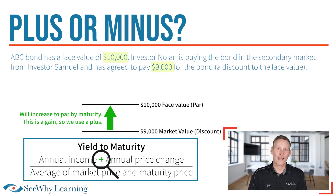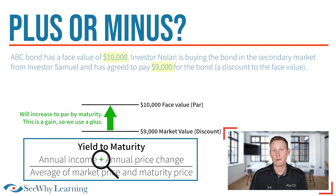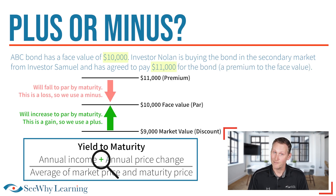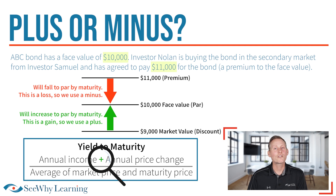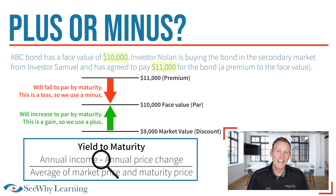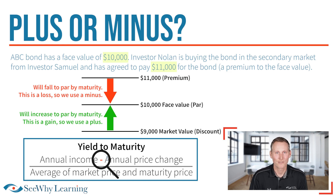On the other hand, if the market value of the bond was trading at a premium — say $11,000 — again, it's going to mature at PAR, $10,000. We insert a minus in the formula, because at maturity Nolan will get less than what he paid for the bond. It's a loss, so we use a minus.